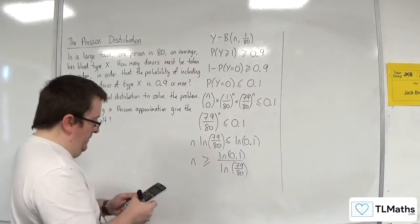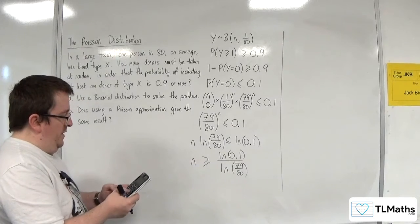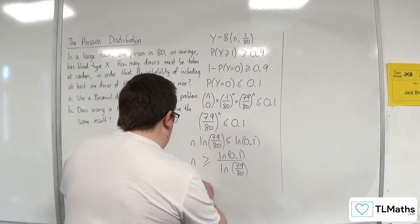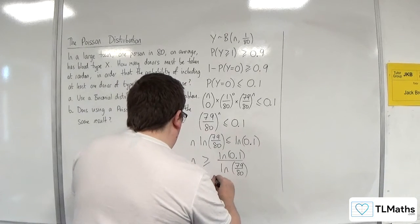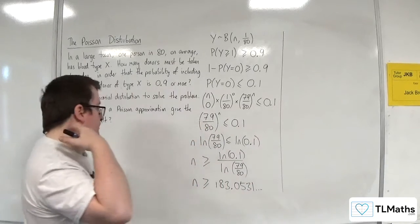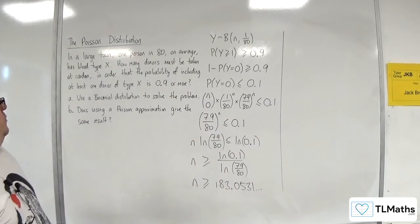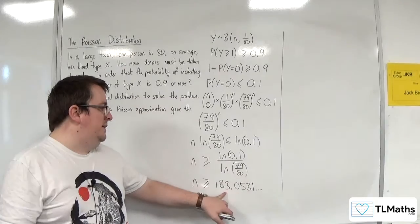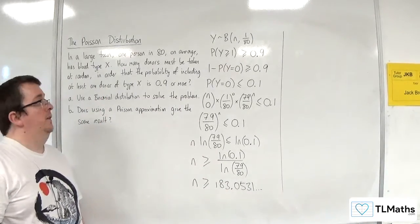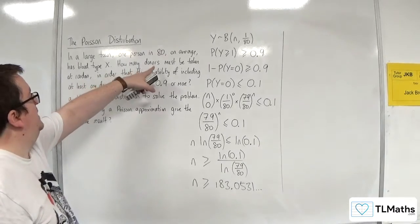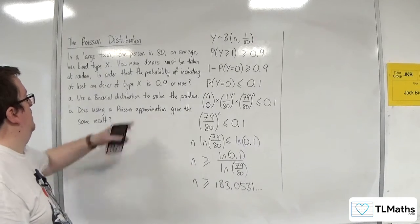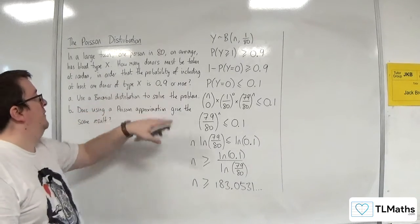Can't do that one in my head, unfortunately. So natural log of 0.1 divided by the natural log of 79 over 80. And so N has got to be greater than or equal to 183.0531, etc. So you'd have to have over 183.0531, so you'd have to have at least 184. So you'd need to take 184 donors, at least that, in order that the probability of including at least one donor of type X is 0.9 or more.